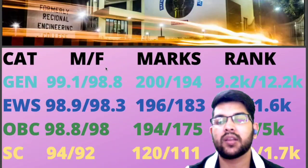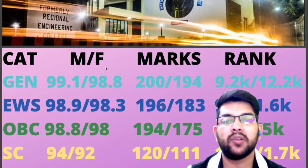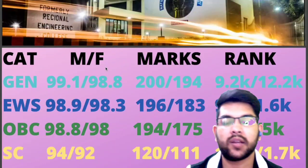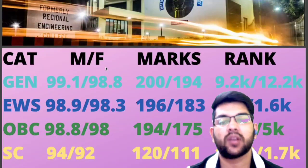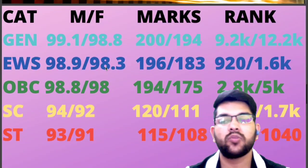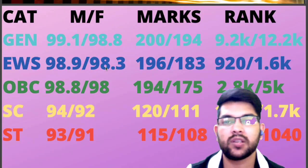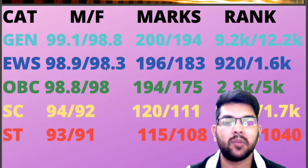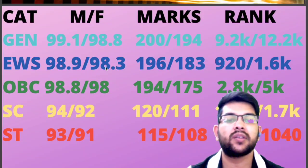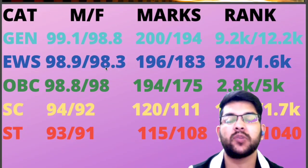For SC category in top 10 NIT, percentile will be 94 for male and 92 for female, marks will be 120 and 111, and SC category rank will be 1,150 and 1,700. For ST category, percentile requirement is 93 for male and 91 for female, marks will be 115 and 108, and ST category rank will be 720 and 1,040.